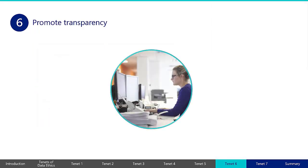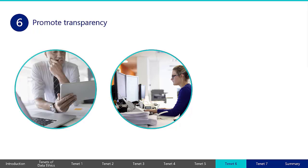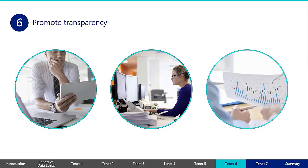Imagine you're a data analyst, and while analyzing some customer data for trends that could help improve the organization's provision of services, you realize that some of the information is missing. Instead of just ignoring it, you decide to bring this to your boss's attention. You explain how the missing data could potentially impact the accuracy of your analysis. Together, you come up with a plan to be transparent about the missing data in your final report. You include a note explaining that some data was missing and the potential impact it could have on the analysis and on any business decisions made based on the analysis. You also suggest ways to gather more complete data in the future. By promoting transparency, you're doing the right thing ethically, making sure the analysis is as accurate and trustworthy as possible.